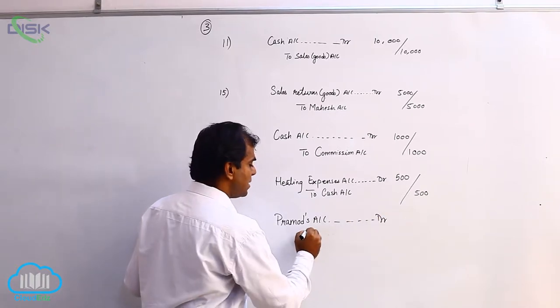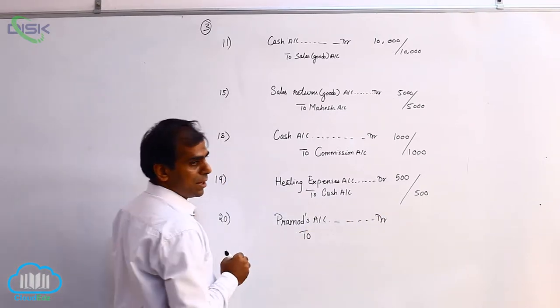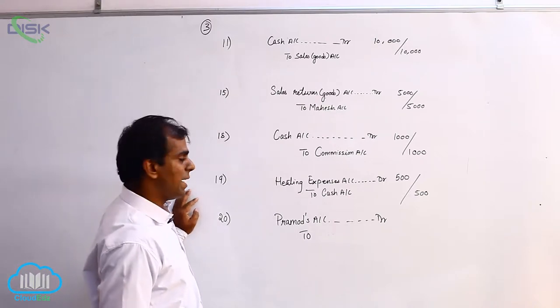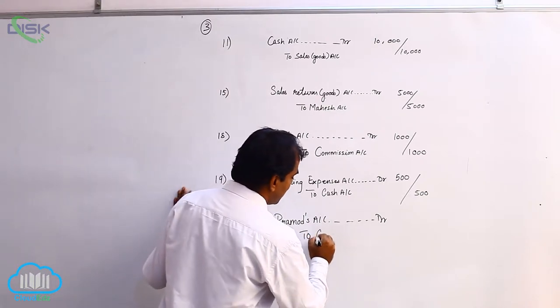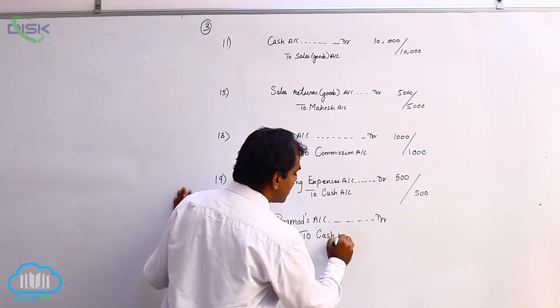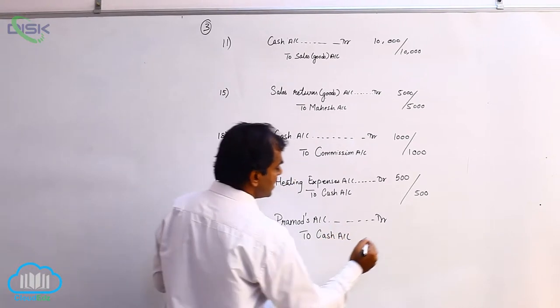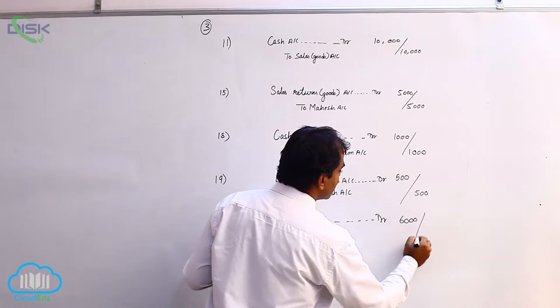Now cash is going out of the business. So we apply credit what goes out, the real account rule, and credit cash. So to cash account, and the amount is 6000.